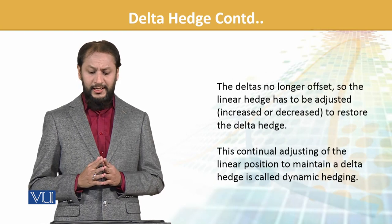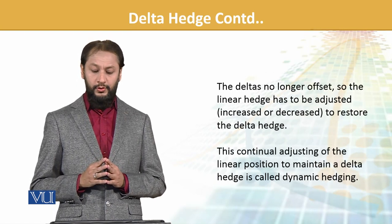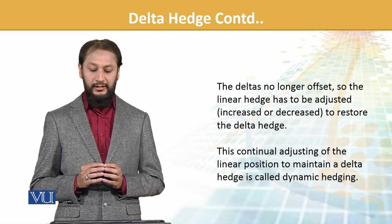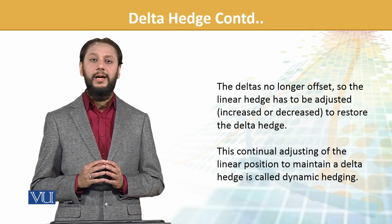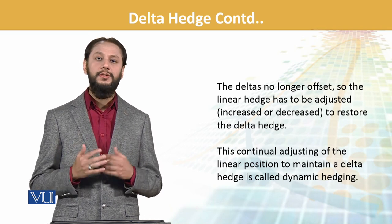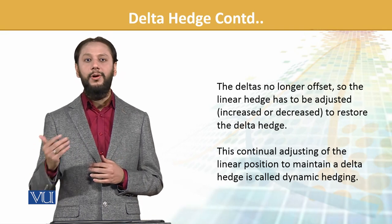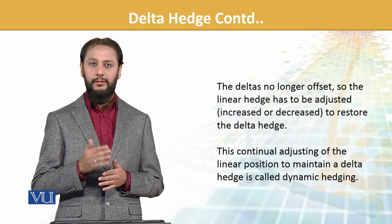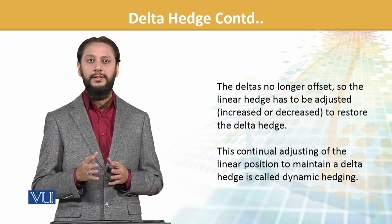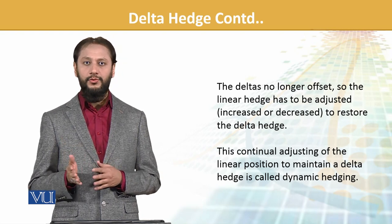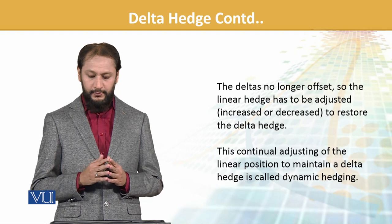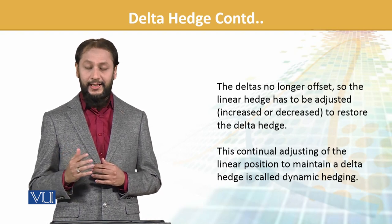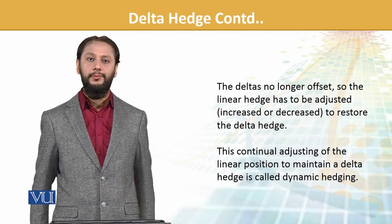The delta is no longer offset, so the linear hedge has to be adjusted — increased or decreased — to restore the delta hedge, because the situation changes and we need to adapt. You remember we used the word dynamic — so dynamic is the application here: when things change, we need to capture it. This continual adjusting of the linear position to maintain delta is called dynamic hedging. Thank you.